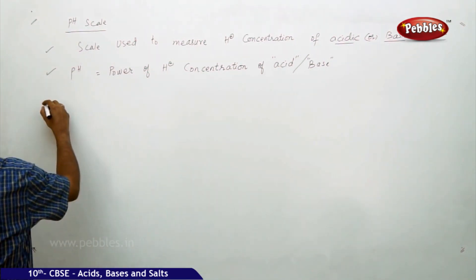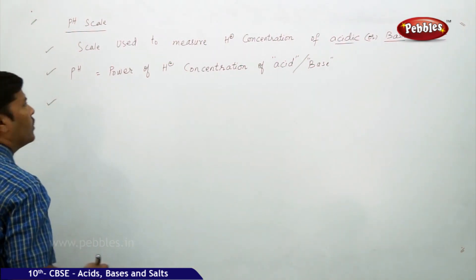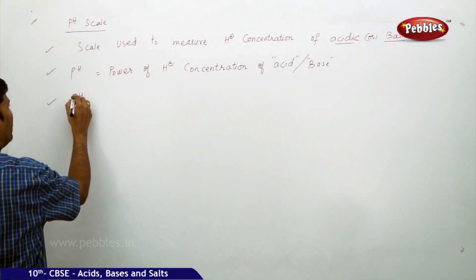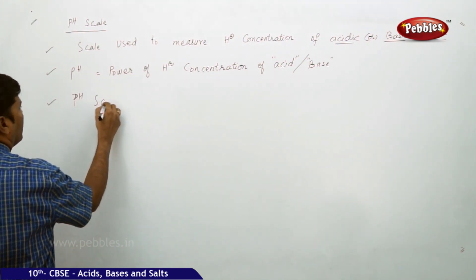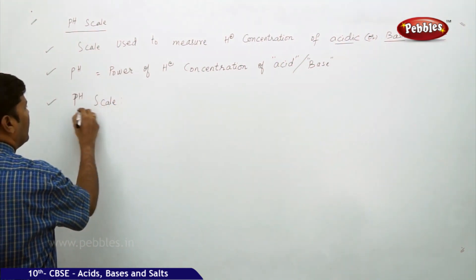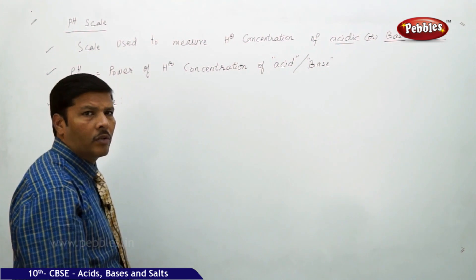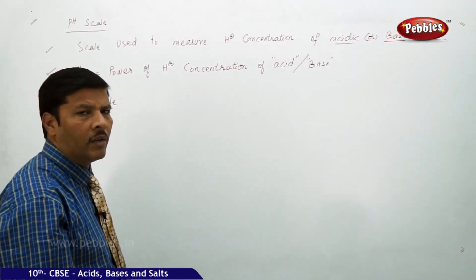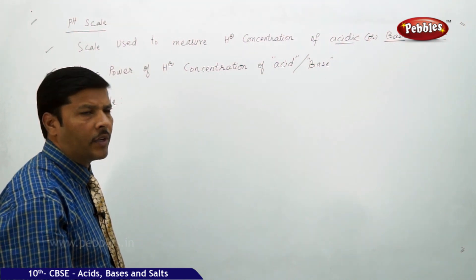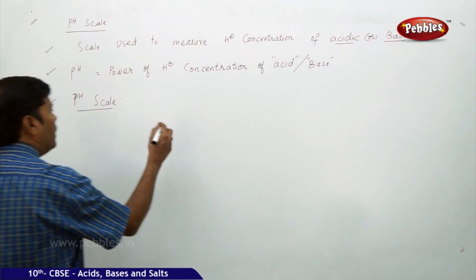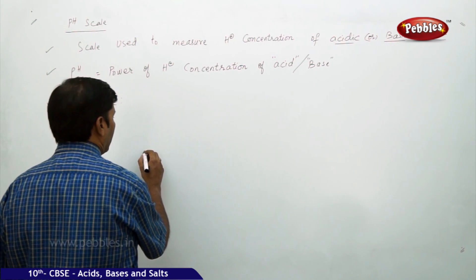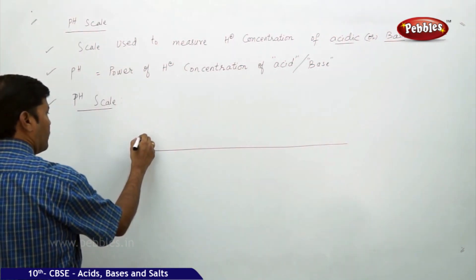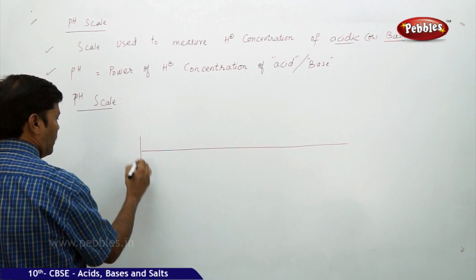The pH scale is based on the hydrogen ion concentration. This pH scale has a lower limit, a middle limit, and an upper limit. Let's look at the pH values alongside their corresponding H+ ion concentrations.